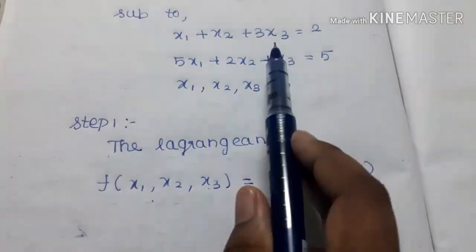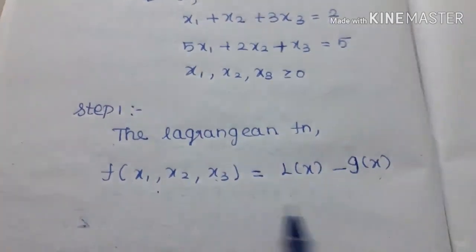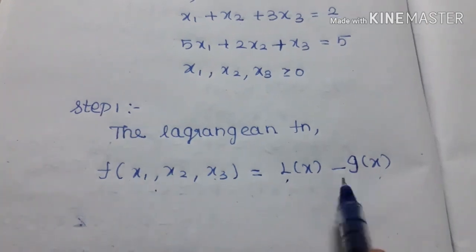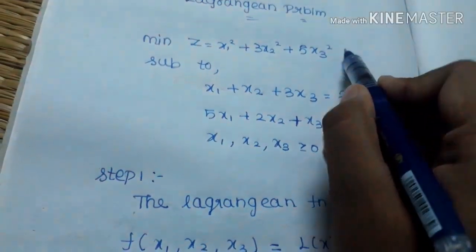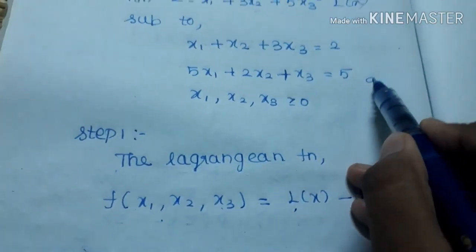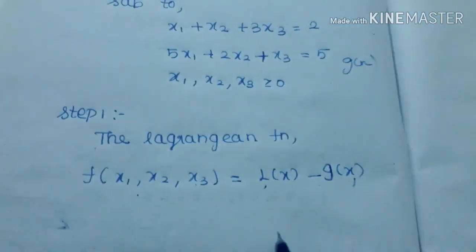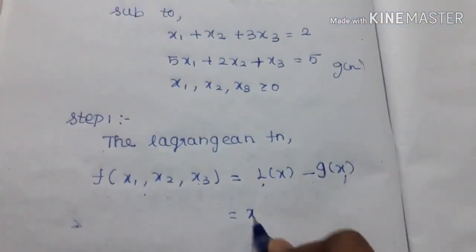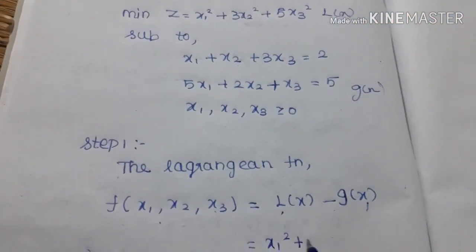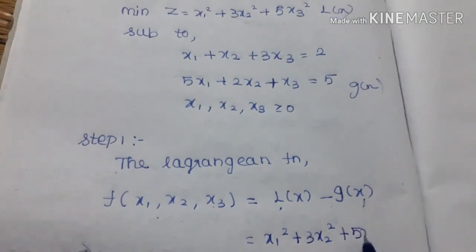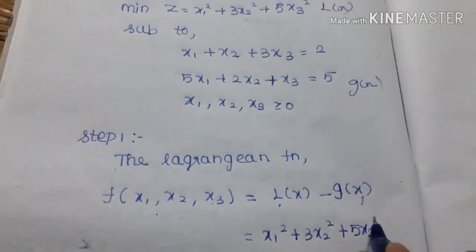We will write the coefficients of x1, x2, x3. We will write the formula L(x) minus g(x). L(x) is this term. So this is L(x) and this is g(x). What is L(x)? It is x1 squared plus 3x2 squared plus 5x3 squared.